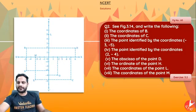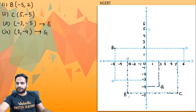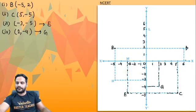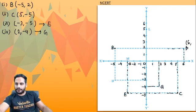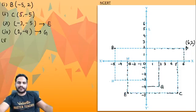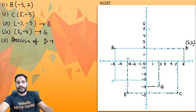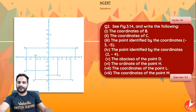Abscissa of point D. Point D is over here, and the coordinates of point D are (6, ...). The question is asking for the abscissa of point D — abscissa means x-coordinate. So the x-coordinate is 6.